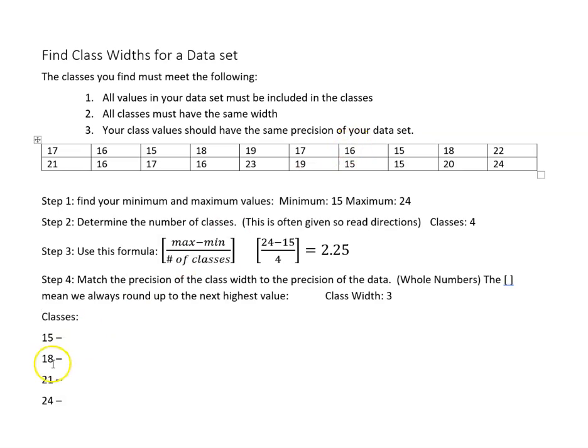Because we're dealing with whole numbers, we're going to subtract 1 from 18, and that's going to tell us that our high value here should be 17. And subtract 1 from 21—our upper value for the second class is 20. Subtract 1 from 24, and our upper value is 23. And then if you can see that the class width is 3.